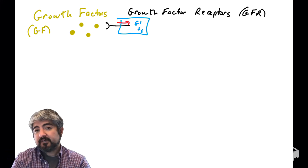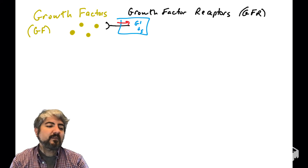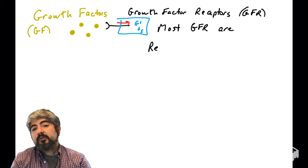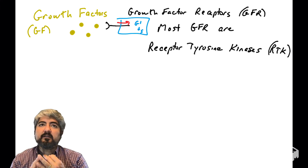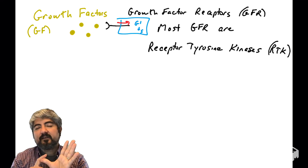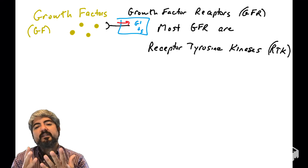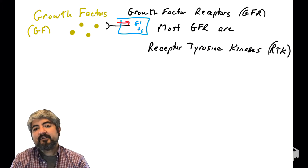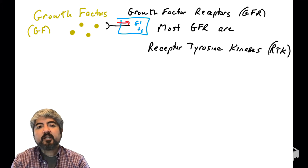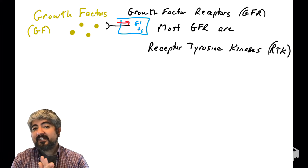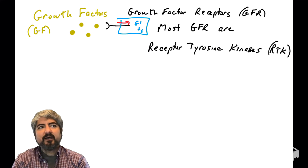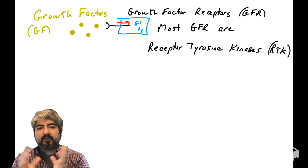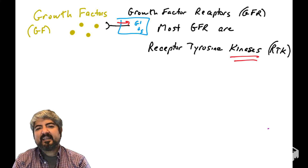This receptor — the growth factor receptor — is actually pretty complicated. Most growth factor receptors, like EGFR, PDGFR, FGFR, VEGFR, and IGFR, are all receptor tyrosine kinases. It's really important to understand RTKs, or receptor tyrosine kinases, so let's unpack that phrase slowly.